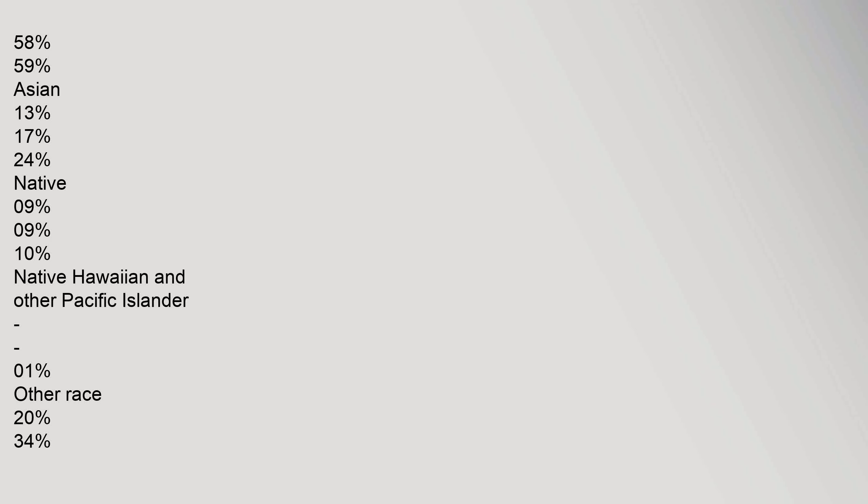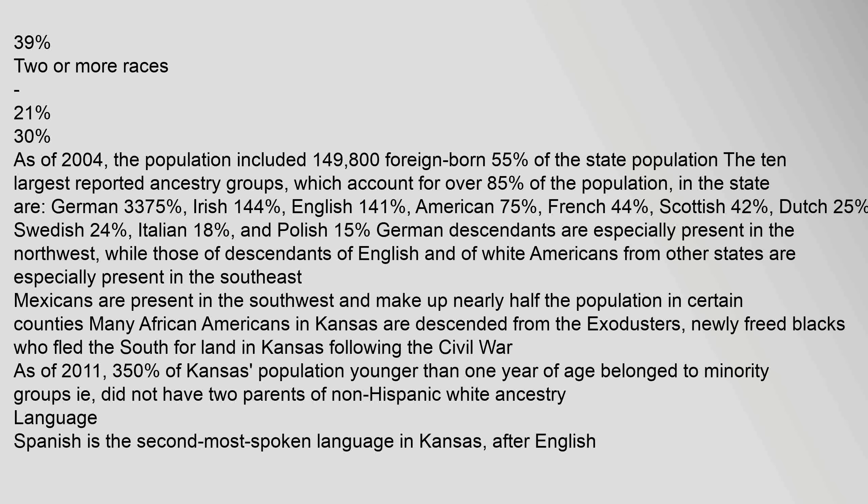As of 2004, the population included 149,800 foreign-born residents, representing 5.5% of the state population. The ten largest reported ancestry groups, accounting for over 85% of the population, are: German 33.75%, Irish 14.4%, English 14.1%, American 7.5%, French 4.4%, Scottish 4.2%, Dutch 2.5%, Swedish 2.4%, Italian 1.8%, and Polish 1.5%.